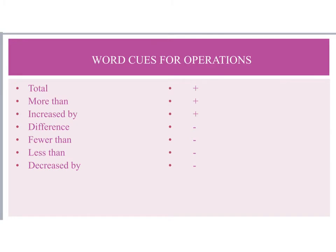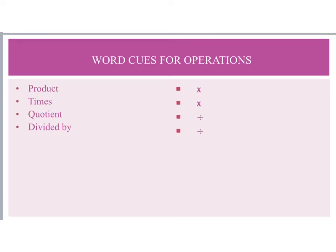Part c again has variables and numbers with operators, so it is considered a variable expression as well. Now when looking at word equations, there are indicator words that tell us whether we're adding, subtracting, multiplying, or dividing. Words like 'total,' 'more than,' and 'increased by' indicate addition. Words like 'difference,' 'fewer than,' 'less than,' or 'decreased by' indicate subtraction.